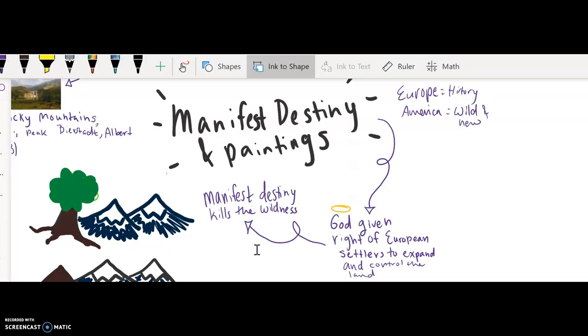In going out and controlling this land that was seen so different from Europe in that it wasn't just having this history and this deep and this beautiful architecture, it was that it was wild and that it was new to this country.